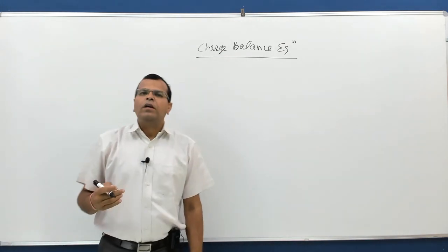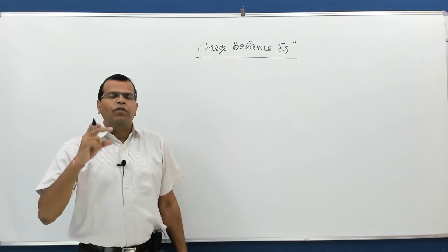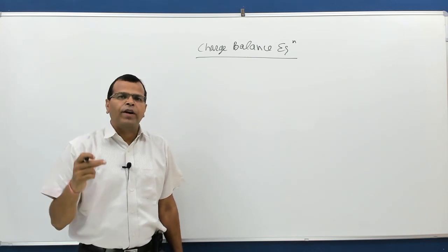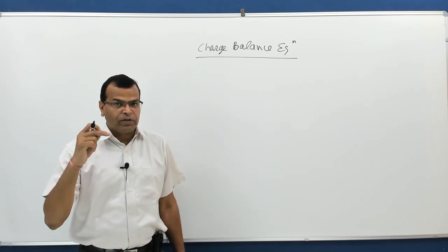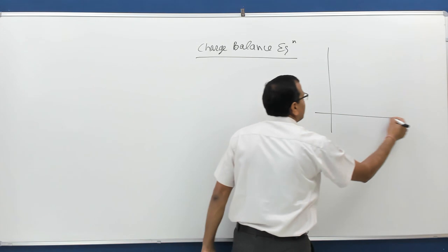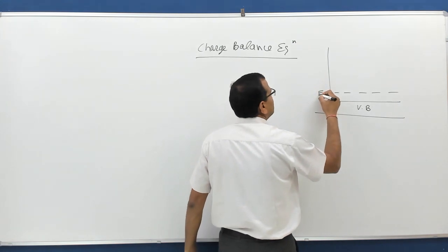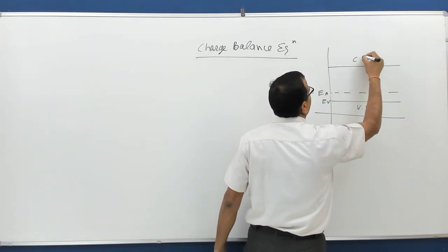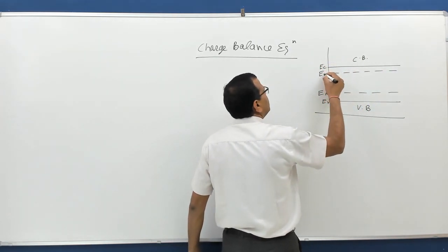Let us visualize the types of charges in extrinsic semiconductors. In the valence band, we have holes — a hole has a positive charge of magnitude equal to the charge of an electron. Then we have negative bound charge. In the energy level diagram, we have the valence band, the acceptor energy level, the conduction band, and the donor energy level.